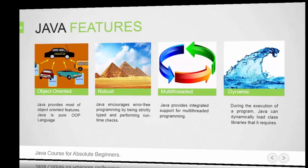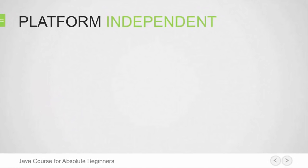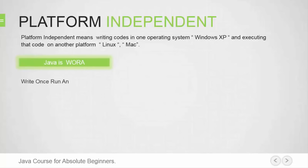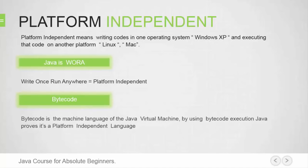Platform independence is the best feature of Java. Platform independent means writing code in one operating system, for example Windows XP, and executing that code on another platform, for example Linux or Mac. This is called WORA — write once, run anywhere — and this phenomenon is called platform independence. How does Java become platform independent? This is due to the phenomenon called bytecode. Bytecode is the machine language of the Java Virtual Machine; by using bytecode execution, Java proves it's a platform-independent language.